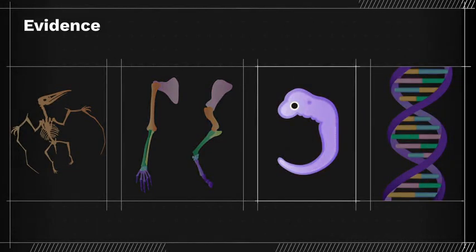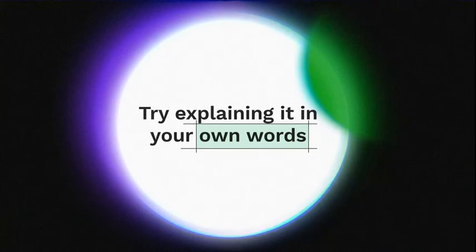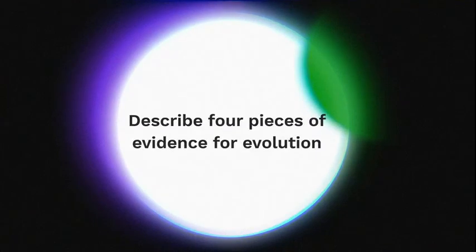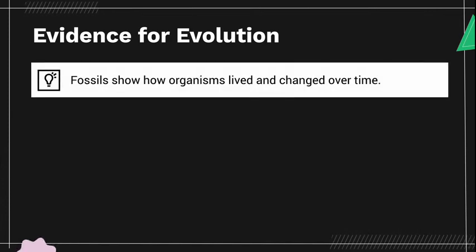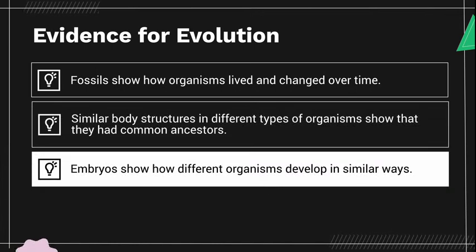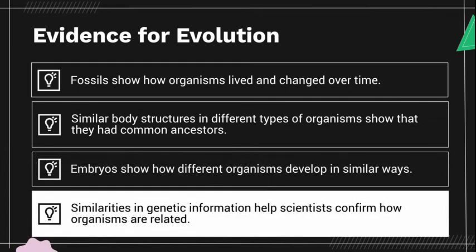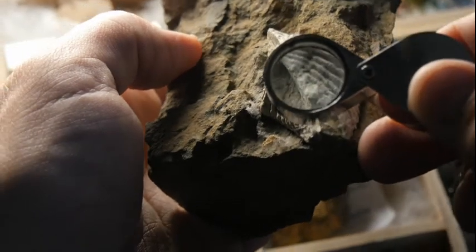Fossils, body structures, embryos, and genetic information aren't the only types of evidence scientists use to determine how living things evolved, but they are key pieces to the puzzle of life on Earth. Here are some key pieces of evidence for evolution: fossils show how organisms lived and changed over time; similar body structures in different types of organisms show that they had common ancestors; embryos show how different organisms develop in similar ways; and similarities in genetic information help scientists confirm how organisms are related. What questions do you still have about the evidence for evolution?